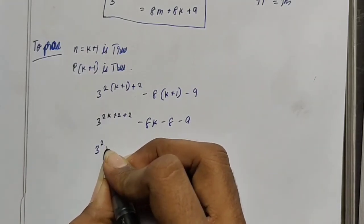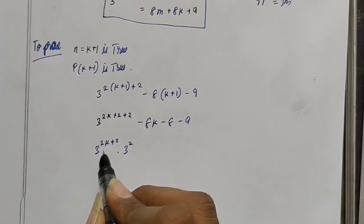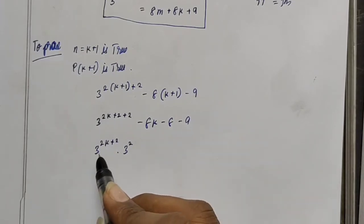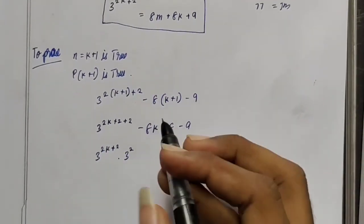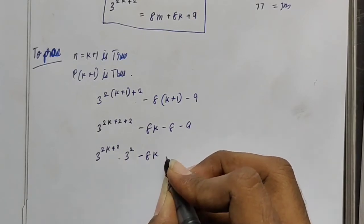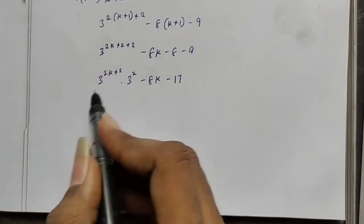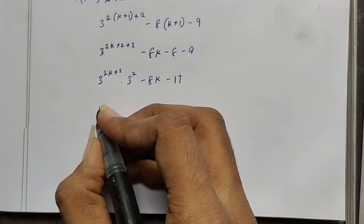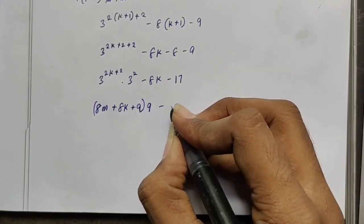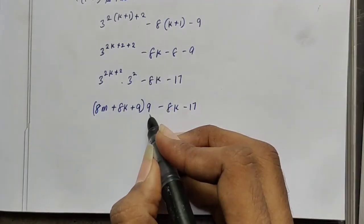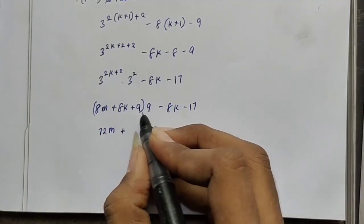We multiply 3 power 2k plus 2 by 3 square, giving 3 power 2k plus 2 into 9. Then we have minus 8k minus 8 minus 9. We substitute 3 power 2k plus 2 equals 8m plus 8k plus 9. So we get 9 into 8m plus 8k plus 9, minus 8k minus 8 minus 9. That is 72m plus 72k plus 81, minus 8k minus 17, which is 72m plus 64k plus 64.